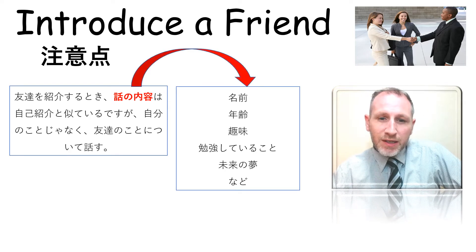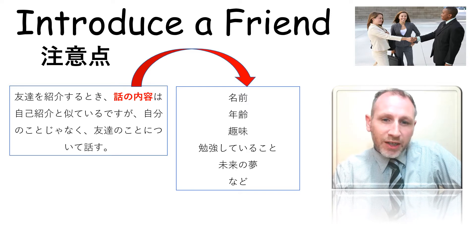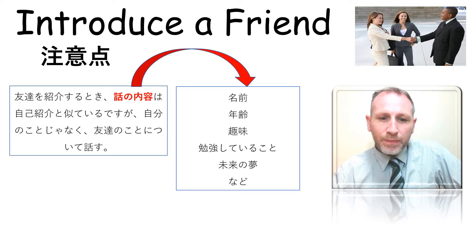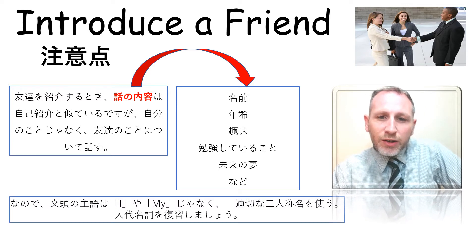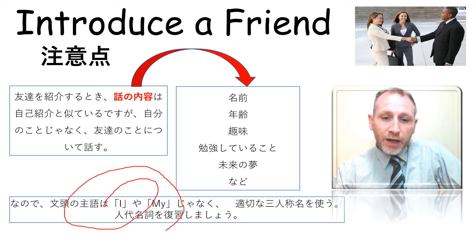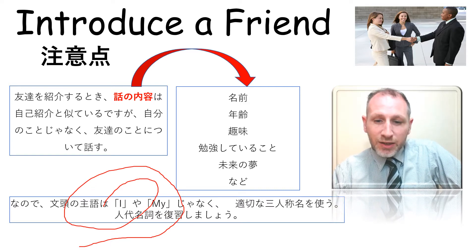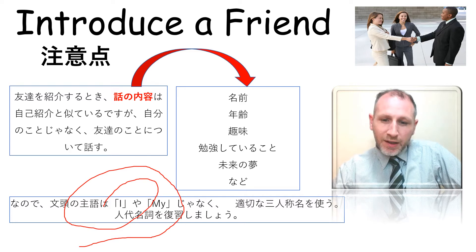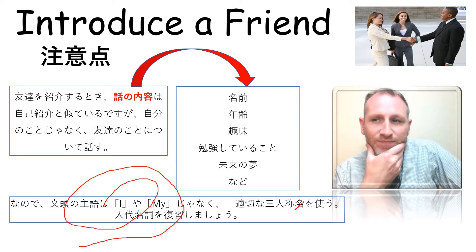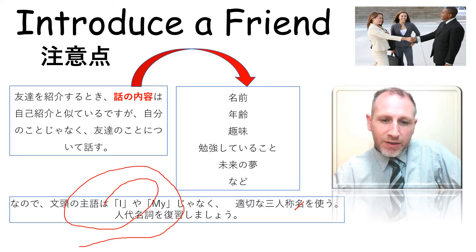What that really means is that the information usually includes the name of the person, their age, what their hobby is, what they're studying, where they're living, what they want to do in the future, and so on. And because you're not talking about yourself but about a friend, instead of using words like 'I' or 'my,' you use the appropriate pronouns to describe a friend.